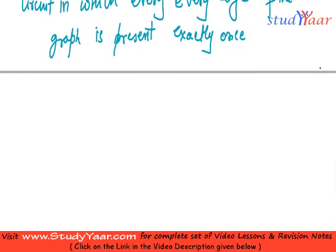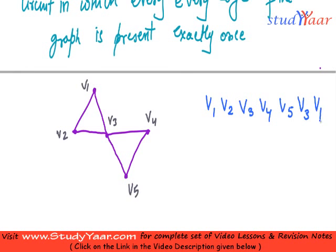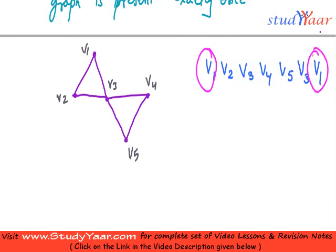Let us take an example. Let us suppose I have vertices like this. Let me give them some names: V1, V2, V3, V4, V5. So let us take a path which is like this: V1, V2, V3, V4, V5, V3, and V1. Now, obviously this is a circuit because the end points are the same.